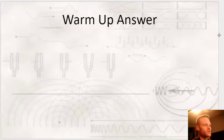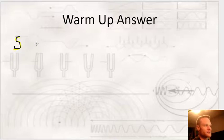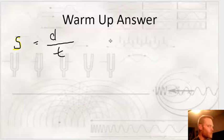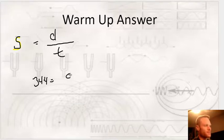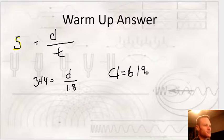We've had some problems with this type of question — on an AOR a while back, a lot of people were missing it. This is not actually using the wave equation; it's using an equation we learned way back at the beginning of the year, which is the speed equation: speed, or S, equals distance over time. In this case, distance is what we're looking for, and we're given the speed of sound, 344 meters per second, over a time of 1.8 seconds. Solving for D, you multiply 1.8 times 344 and get a distance of 619.2 meters.